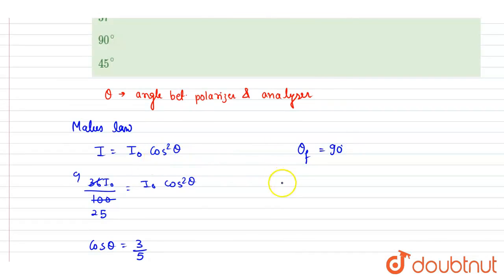So angle rotated should be theta final minus theta initial, that is 90 minus 53, and it is 37. And this is the answer to this question.